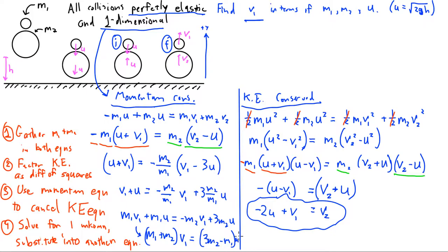I'm going to write this up here as our answer. V1 is going to be 3M2 minus M1 over M1 plus M2 times U. And that is going to be our answer. I'm even going to draw a little box around it.